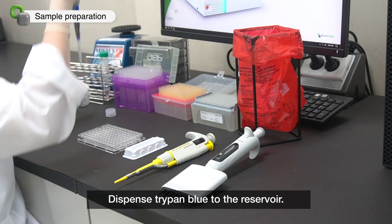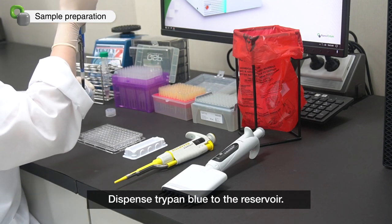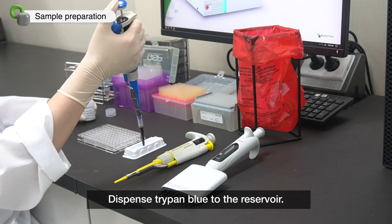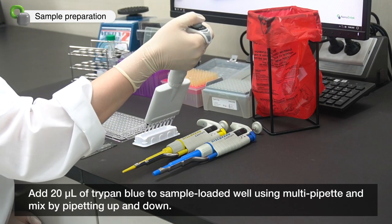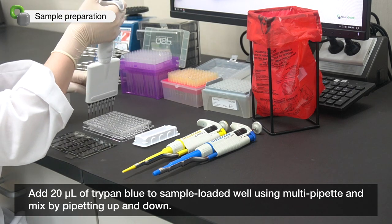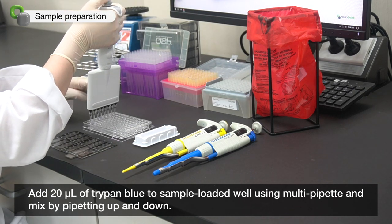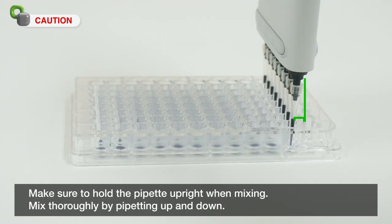Dispense trypan blue to the reservoir. Add 20 microliter of trypan blue to sample loaded well using multi-pipet and mix by pipetting up and down. Make sure to hold the pipet upright when mixing.